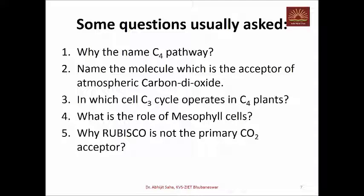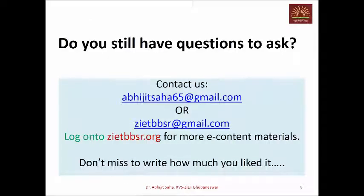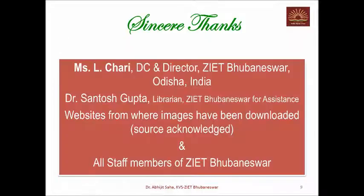Finally: why is RuBisCO not the primary CO2 acceptor in C4 plants? RuBisCO is the key enzyme for the Calvin cycle, but here atmospheric CO2 is accepted by another enzyme — why? So friends, if you still have questions, you may contact. Bye.